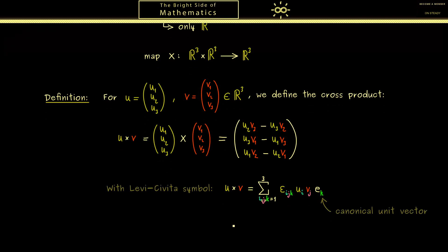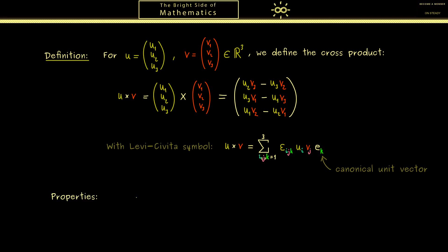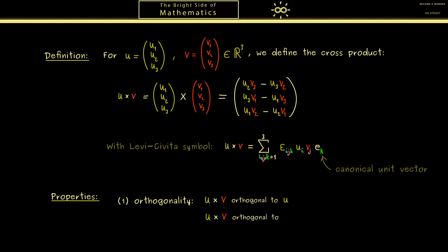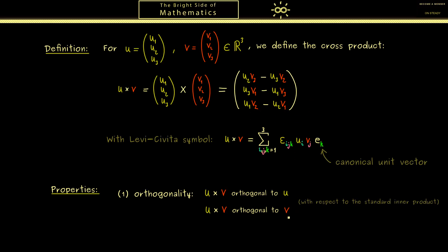For the moment it's good enough to remember the component formula, because then we can talk about the nice properties of the cross product. The first property I call orthogonality: this new vector u times v is orthogonal to both u and v. This is what you really should remember, because it helps us find orthogonal vectors. This property is with respect to the standard inner product discussed in the last video. It means the inner product of (u×v) with u is zero, and the inner product of (u×v) with v is zero — not hard to prove using the formula above.